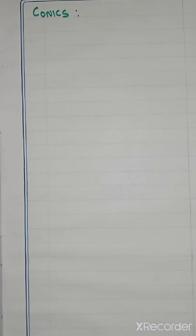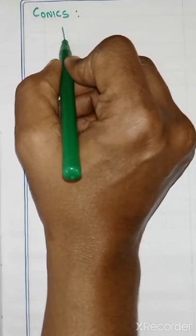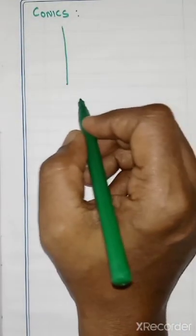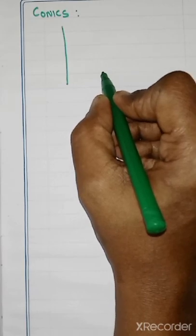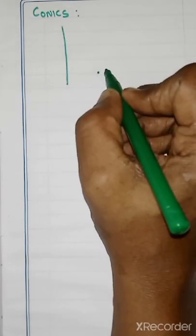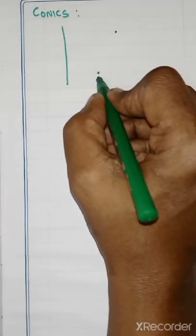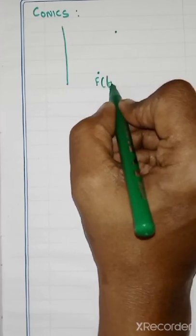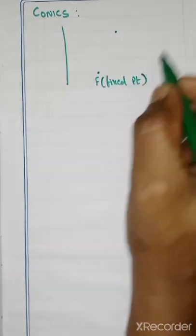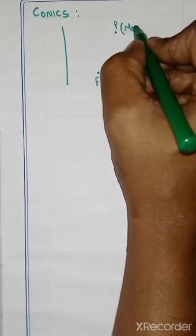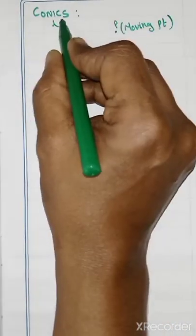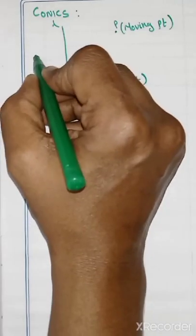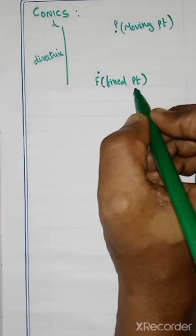So how to form a conic? To form a conic, we take one fixed line — what is meant by fixed line? That is, we can't move this line. So one fixed line, one fixed point, and one moving point. We can take the fixed point as F, the moving point as P, and the fixed line as L. This fixed line is called the directrix.